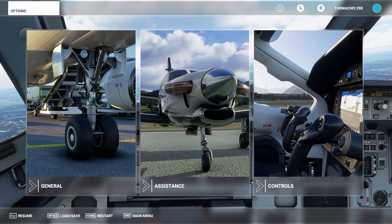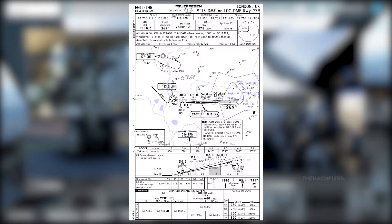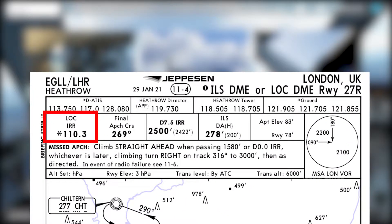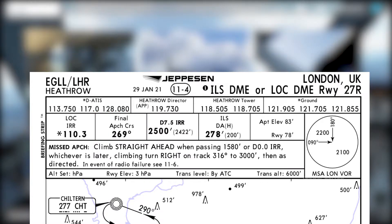This will be a quick tutorial — if you haven't checked out my ILS tutorial at Hong Kong, do check it out in the top right corner. Without further ado, let's get into the chart. The chart I managed to get on the internet seems to be updated, though I'm not sure if it's the latest version. This is the ILS DME or Localizer DME runway 27R at London Heathrow. We have the India Romeo Romeo localizer frequency 110.3, and the final approach course is 269°, which is one degree off the runway track of 270° for runway 27R. The final approach fix is 7.5 miles India Romeo Romeo.